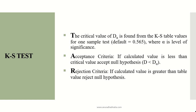The critical value is found from the KS table values for a one-sample test. If not provided, the default value for D-alpha is 0.565, where alpha is the level of significance. The two criteria which need to be followed for the KS test are an acceptance criteria and a rejection criteria.